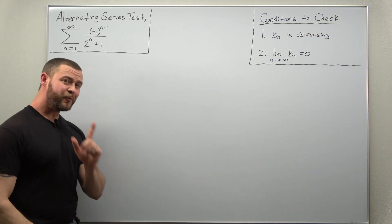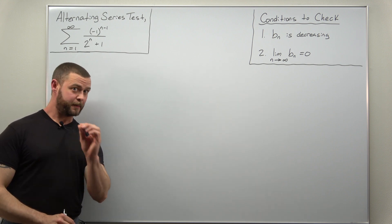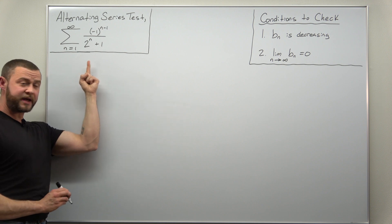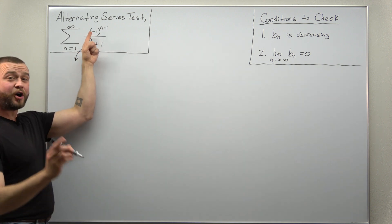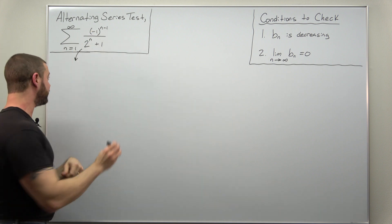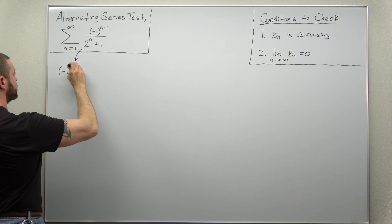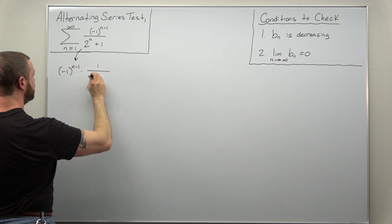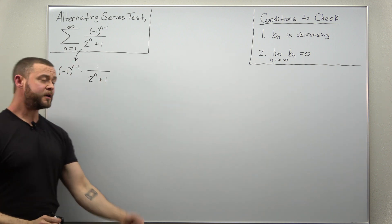To get started, we need to identify the non-alternating part, B sub n. If it's not obvious for this example, let's go ahead and rewrite it. I'm going to go ahead and take the alternating term, negative one to the n minus one, and pull it out front. And now that's going to multiply one divided by two to the n plus one.